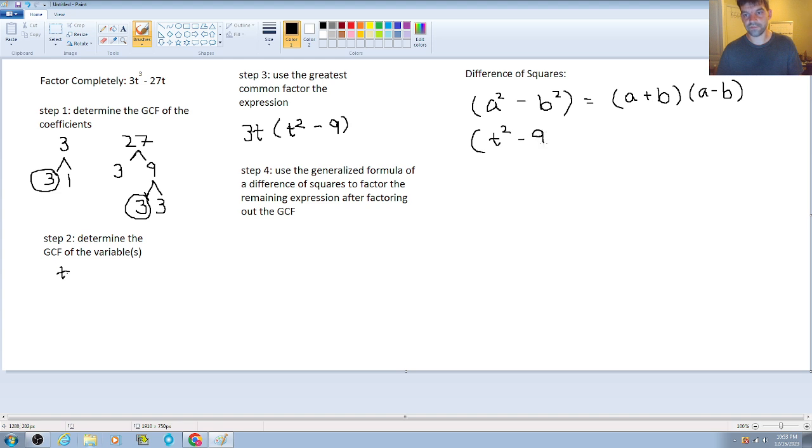model the situation above with our actual values. So if a squared is equal to t squared then a is just equal to t and then b squared is just equal to 9 then b is equal to 3. So to put that into our formula, we have t plus 3 times t minus 3.